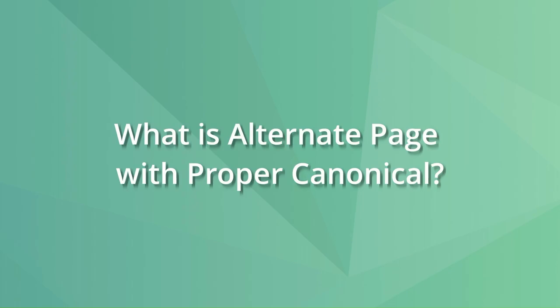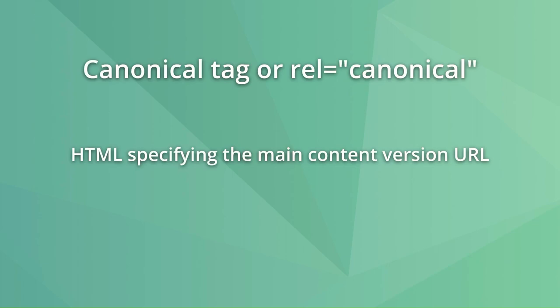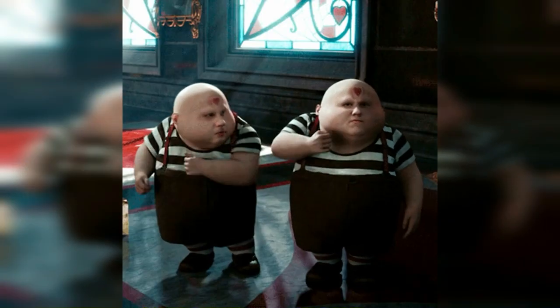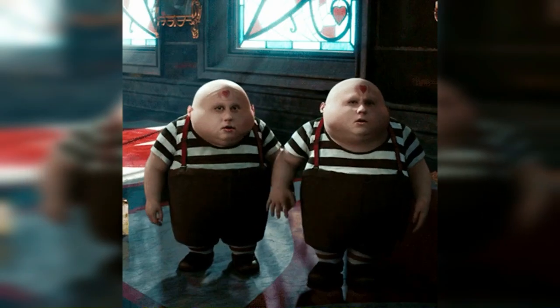To understand what alternate page with proper canonical tag means, you first need to know what a canonical tag is. In short, if you have URLs with the same or similar content, you can use a canonical tag to let Google know which URL should be considered as the main content version. This helps reduce duplicate or similar pages appearing on the search results.